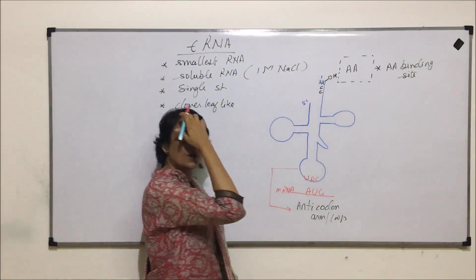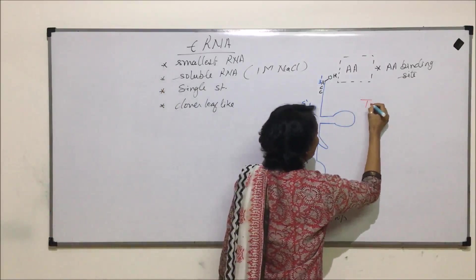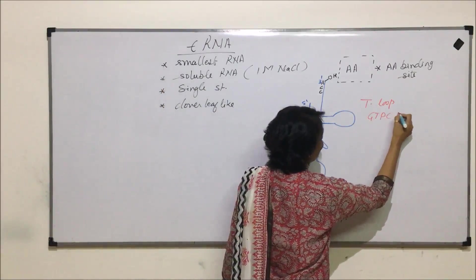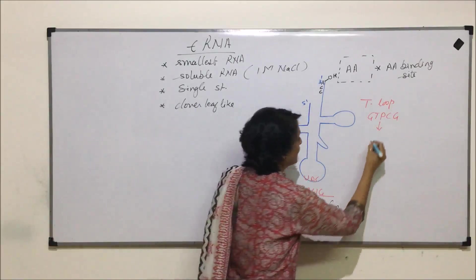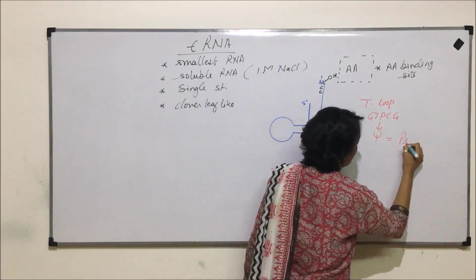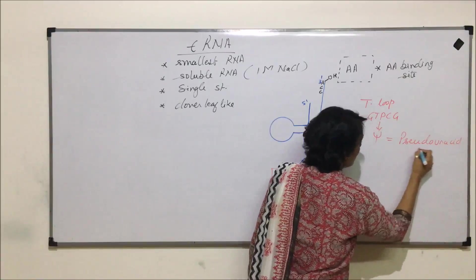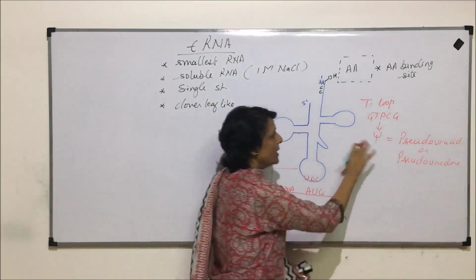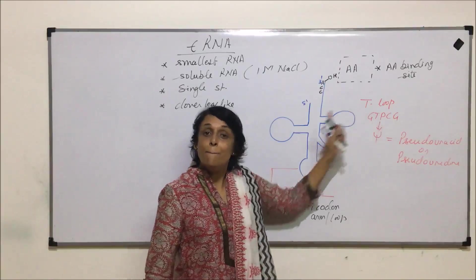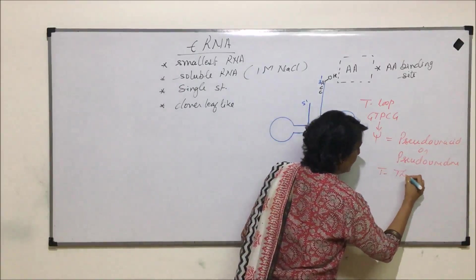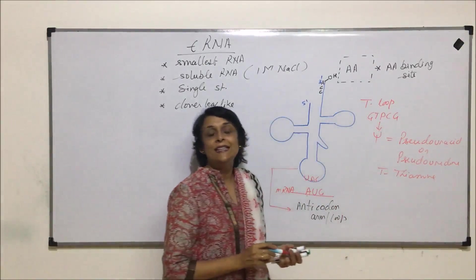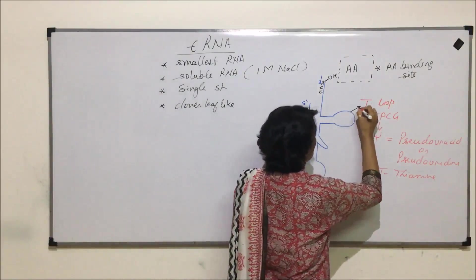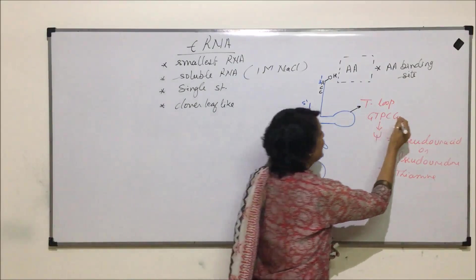The loop which is towards the 3' end is known as the T-loop. It is also called the TψCG loop. The ψ (psi) represents pseudouracil. Normally thymine is not present in RNAs, but here there is a T (thymine), which is why it is called the T-loop. It is also known as the TψCG loop.